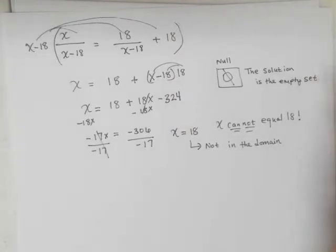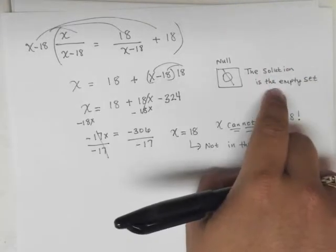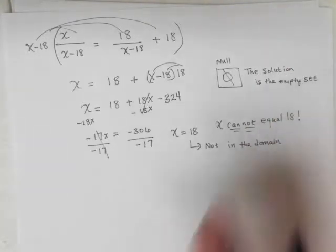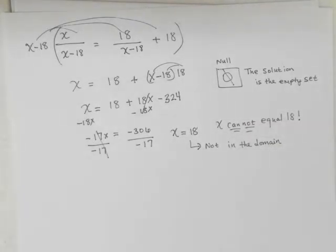Okay, so that is a possibility. So this means null, but it also means the solution is the empty set. So there is the answer—there is no answer to this rational equation.